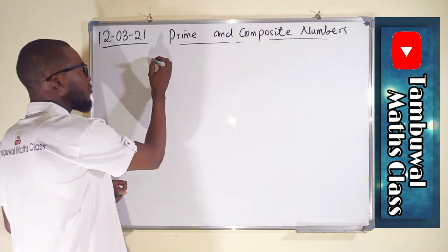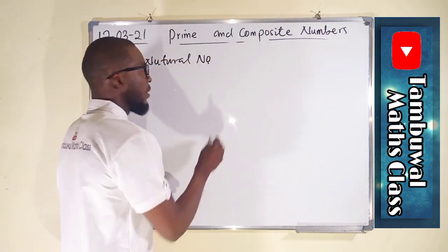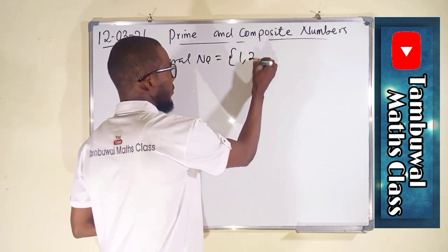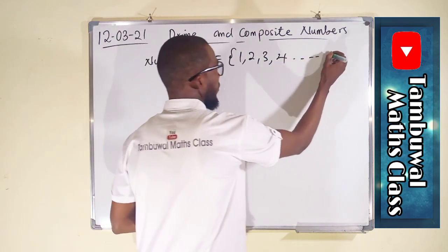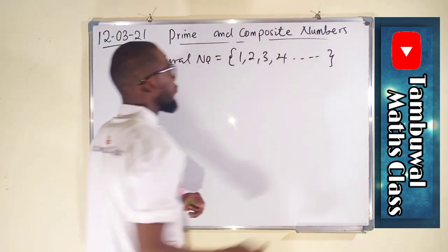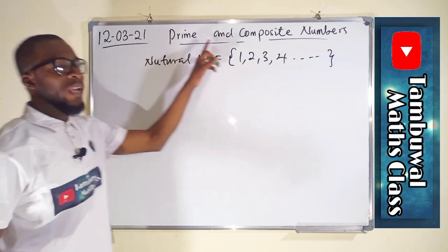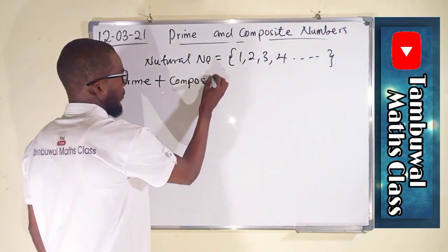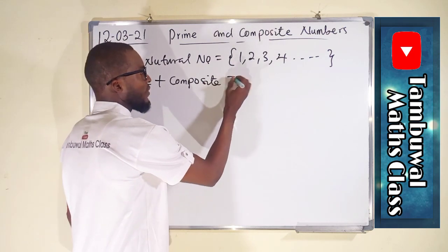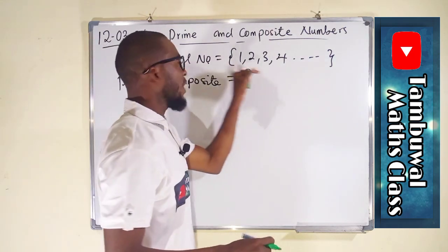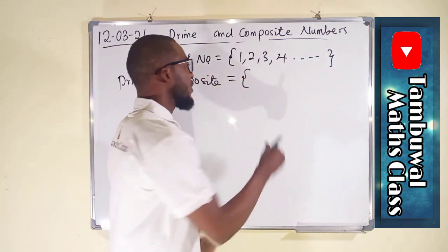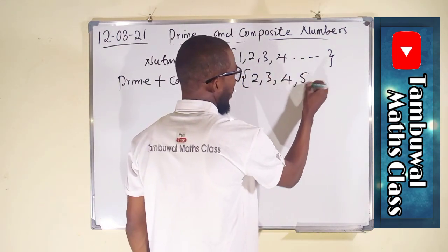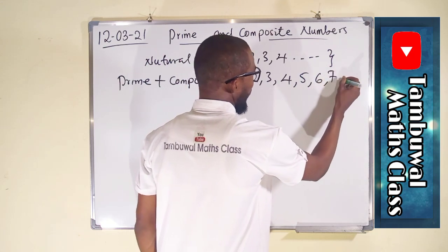We all know natural numbers — they are the set of counting numbers in that order. But prime numbers together with composite numbers give us the set of natural numbers greater than 1. So we have 2, 3, 4, 5, 6, 7 in that order.